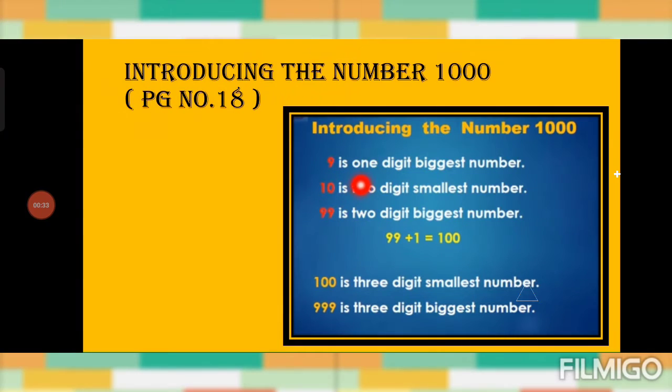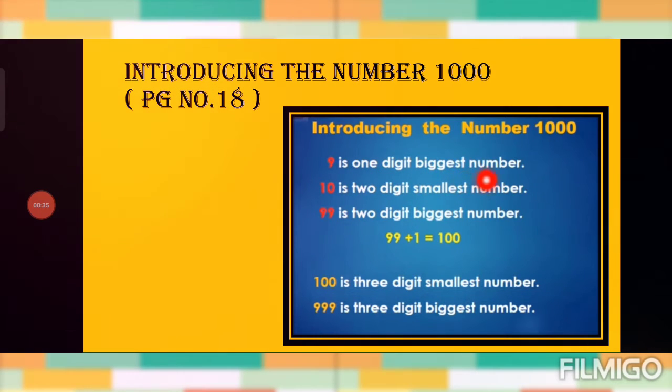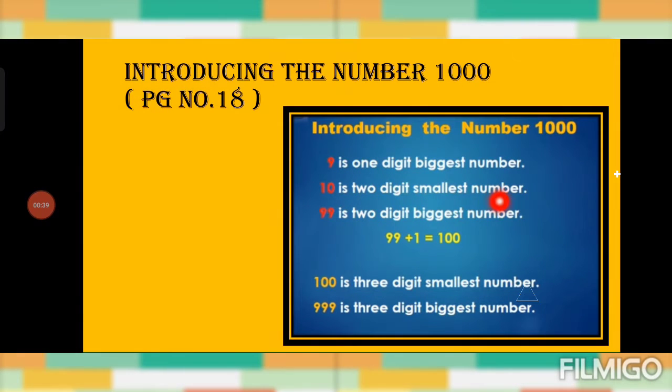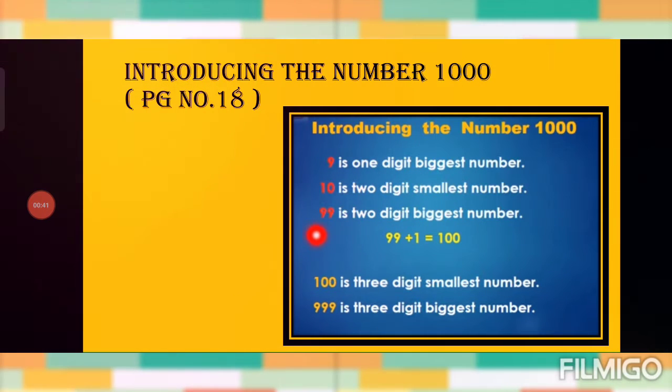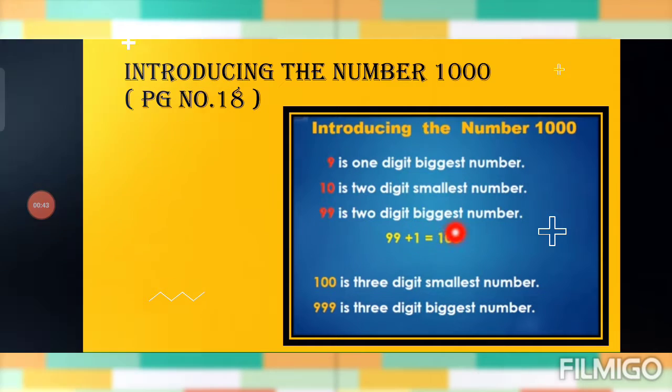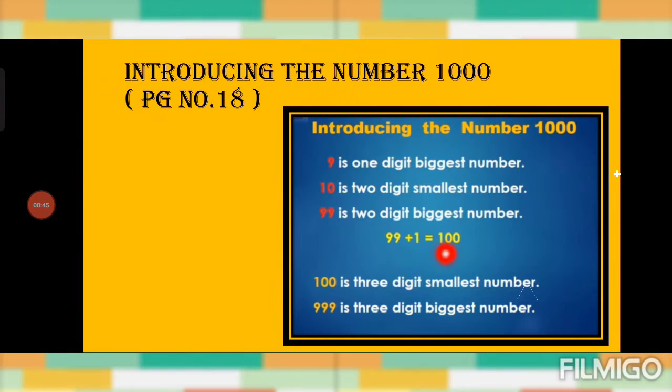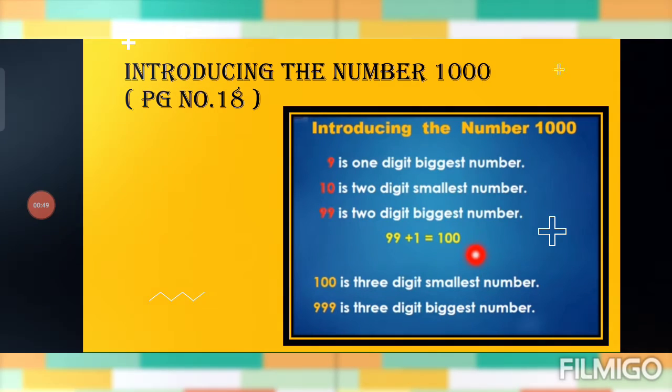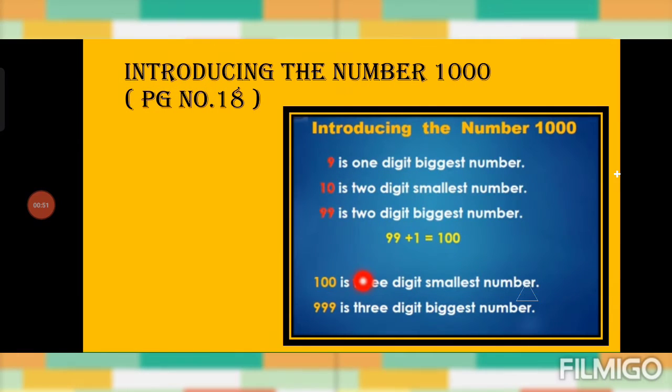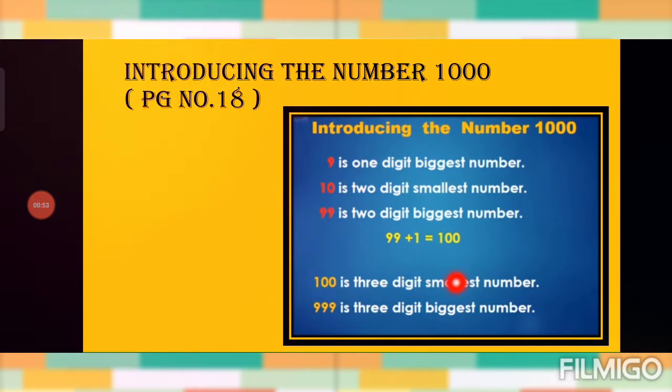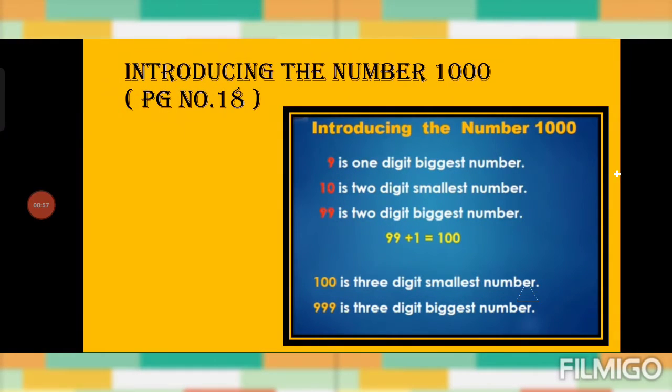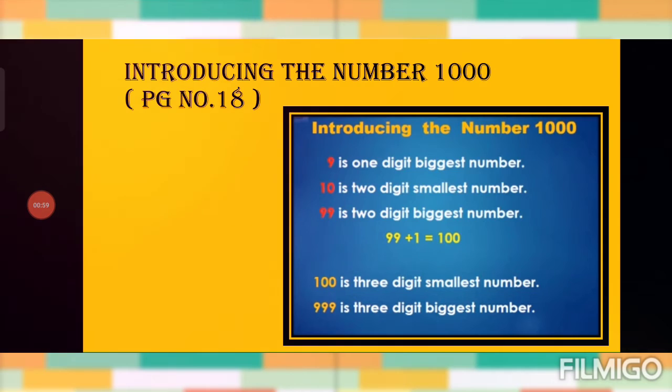Nine is one digit biggest number. Ten is two digit smallest number. Ninety-nine is two digit biggest number. So 99 plus 1 equals 100, and 100 is three digit smallest number. 999 is three digit biggest number.